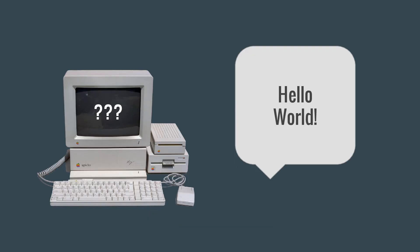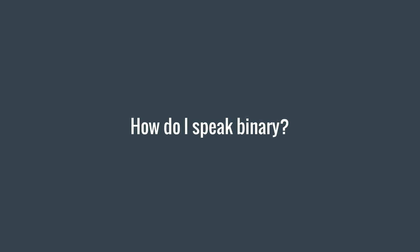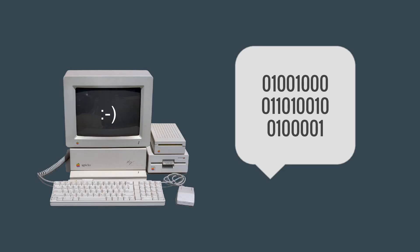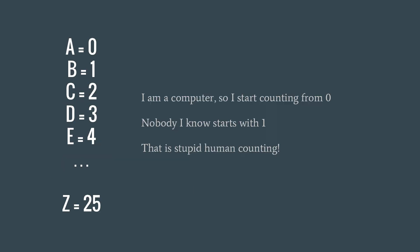A computer can only really deal with numbers — albeit weird binary numbers — but they represent the same amount of something as if written in decimal form. So if we wanted to represent something other than a number, like a character in the alphabet in a computer program, we'd have to do that using a number for each character. For example, 1 through 26 for A to Z.